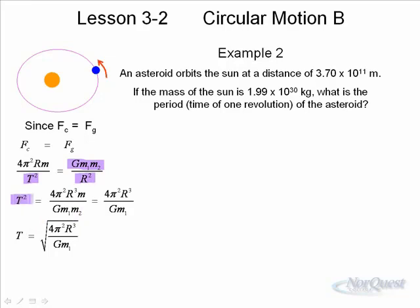This is one of your more complicated derivations. Solving for T², you get 4π²R³. The r's don't cancel, they actually multiply. Divided by Gm1m2, one of the m's cancels, the m2 cancels. That gives you T².